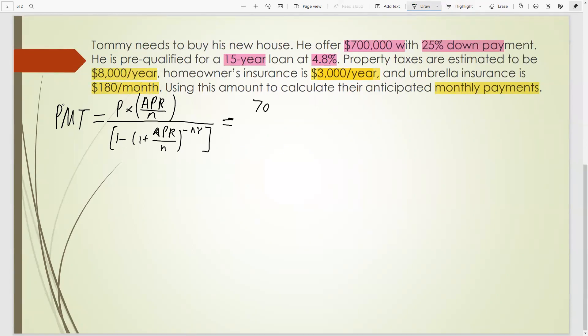Principle is 75% you need to borrow, Tommy needs to borrow. That amount is the principle. And the annual percentage rate divided by the payments making monthly. Minus one plus 0.048 divided by 12 to the negative 12 times 15.